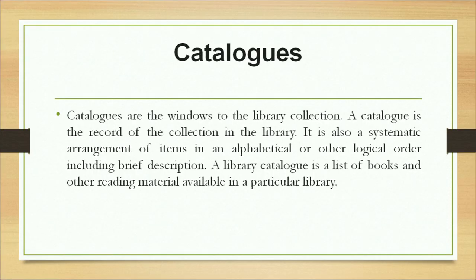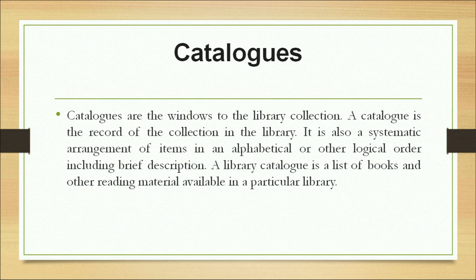First we will talk about catalogs, which is one of the tools for information retrieval. Catalogs are windows to the library collection — they provide a glimpse of the books, magazines, and periodicals held by the library. A catalog is a record of the collection in the library; it is also a systematic arrangement of items in alphabetical or other logical order, including brief descriptions.